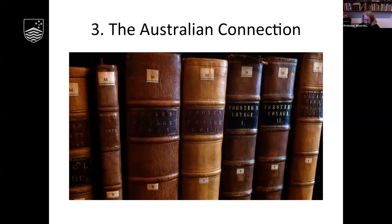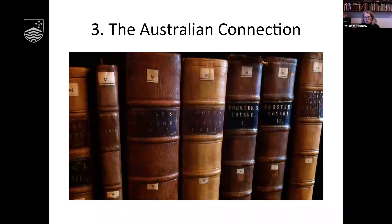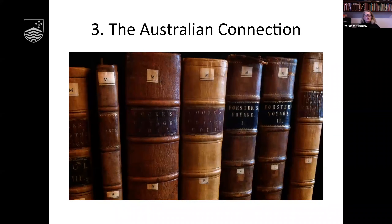I'd read Malthus in many republications and never knew that he wrote about New South Wales, let alone Aboriginal people, let alone naming Benalong and Colby by name. I couldn't quite comprehend what this was because I thought I knew Malthus. I remember emailing the very learned John Gascoigne straight away, and care of wonderful time differences, John was online. I said, did you know that Malthus wrote about New South Wales? And John said, no, that's curious. And that was many years ago now.